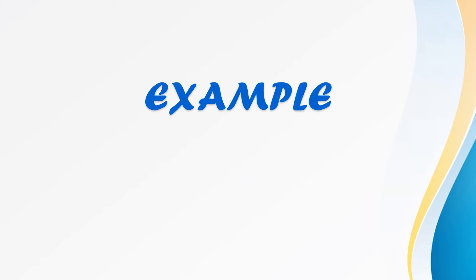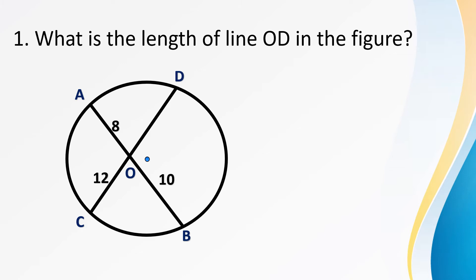How do we use this in solving problems? Number one: what is the length of line OD in the figure? Chord AB is divided into two line segments — line segment AO and line segment OB. AO measures 8, line segment OB is 10. For chord CD, the given measurement is line segment CO, which is 12. The problem asks us to find the measure of line segment OD.